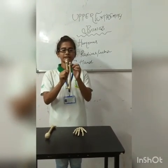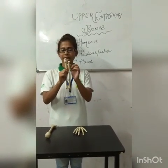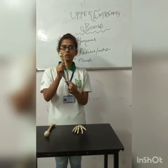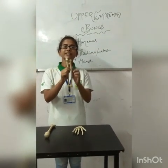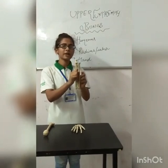The parts of radius are head, neck, radial tuberosity, shaft, and styloid process. Radius lies towards our thumb side.